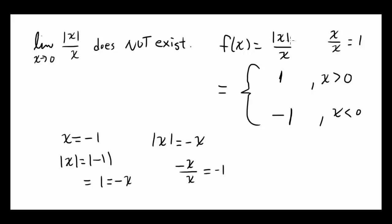Obviously, when x is 0, you're going to have 0 over 0. You're dividing by 0, so it's going to be undefined. So how can you graph this?